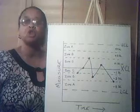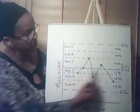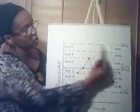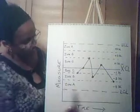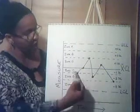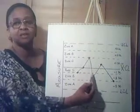So again, the four key features of a control chart are the average or center line, your upper control limit line, your lower control limit line, and your measurement data points.